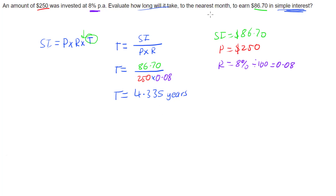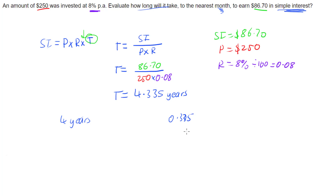We were asked to the nearest month, so years alone won't do. We need to work out how many months 0.335 of a year is. We already know we have four full years, so we want to take that 0.335 decimal part of a year and turn it into months.